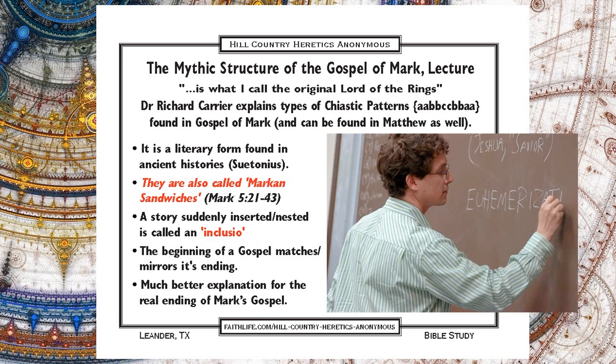Ring structure was only used in antiquity in real histories or biographies when they were non-chronological. For example, Suetonius writes a whole bunch of biographies, and all of them follow ring structure very faithfully. But his biographies aren't chronological — they start with the birth and end with the death, but everything in between is organized by theme, which makes it possible to create his chiasmus. Because history doesn't work out that neatly, you have to do it non-chronologically. But the Gospels work chronologically, so you can immediately be suspicious when they start doing this.